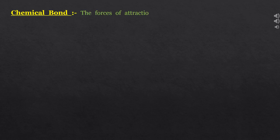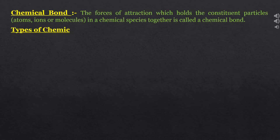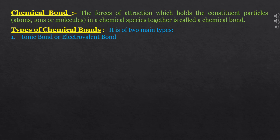To find the answer to the third question — what is the nature of the force which holds atoms together in a molecule — let's study chemical bond. The force of attraction which holds the constituent particles, that is atoms, ions, or molecules, in a chemical species together is called a chemical bond. There are two main types: first is ionic bond or electrovalent bond, and second is covalent bond. We will also discuss coordinate covalent bond.